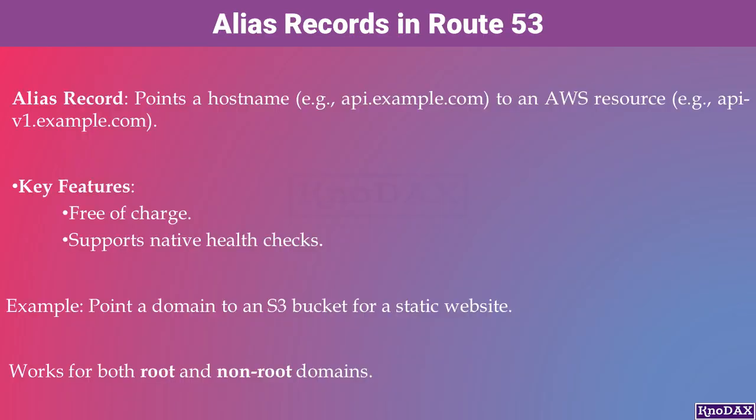Unlike CNAME records, ALIAS records can be used for both root domains, like example.com, and non-root domains, such as www.example.com. This flexibility and integration make ALIAS records a powerful tool in Route 53.